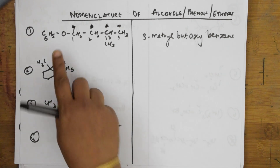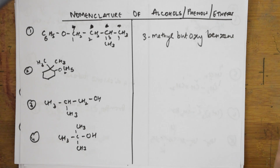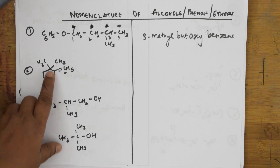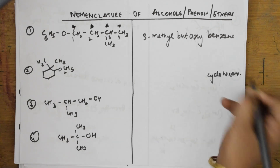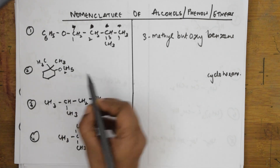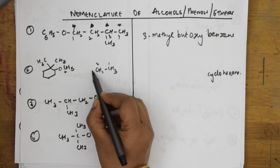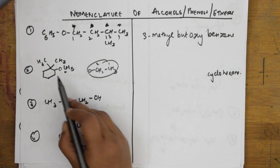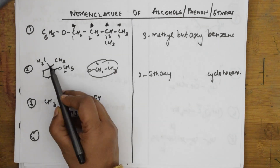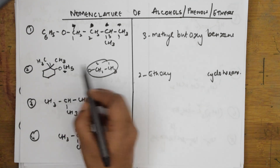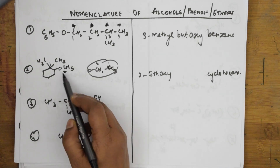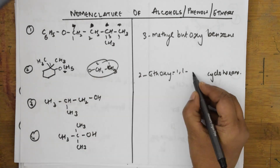Whenever you have an ether, you name it using '-oxy'. So this becomes butoxybenzene — specifically 3-methylbutoxybenzene. For the cyclohexane example, there is an ether group so we use '-oxy' here too. The parent chain is cyclohexane with six carbon atoms. The ethoxy group — which is CH₂CH₃ with oxygen — is present at the second carbon. Combined with two methyl groups, this is 2-ethoxy-1,1-dimethylcyclohexane.